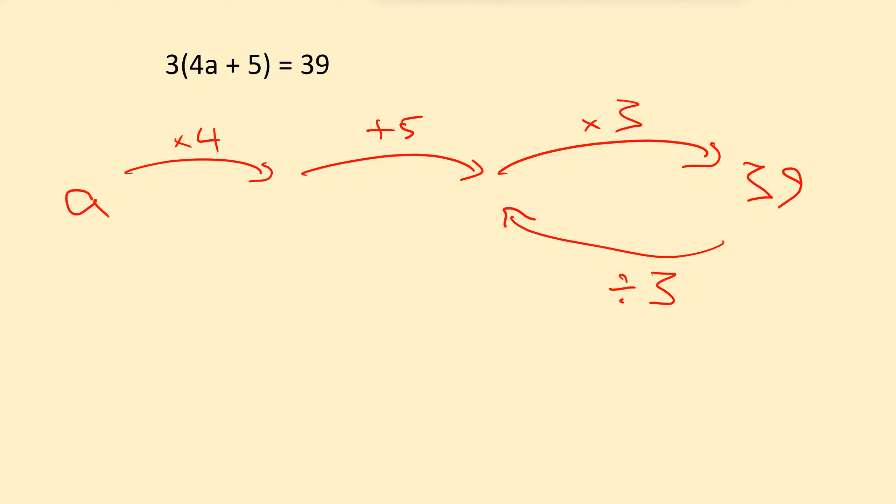39 divided by 3 will give us 13. Now that arrow's a bit in the way, so let's just put it down here. Okay, so we're at 13. And we keep backtracking.